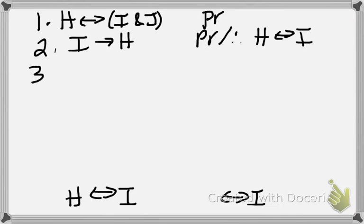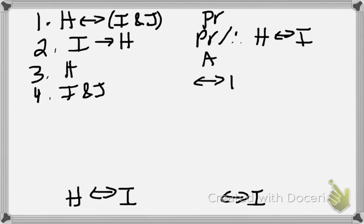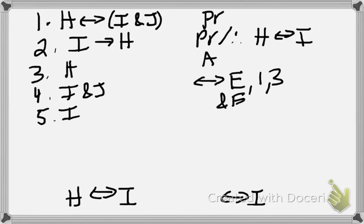We'll start out by assuming H, and we're going to try to get to I. If we have H, then we can get I and J by biconditional elimination on lines 1 and 3. And if we have I and J, then we can get I by and-elimination on line 4. And then we put that in a box.